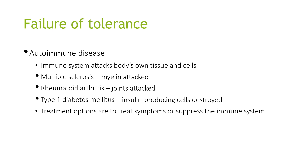Autoimmune disease is where the immune system attacks the body's own tissues and cells. For example, in multiple sclerosis, myelin is attacked; in rheumatoid arthritis, the joints are attacked; and in type 1 diabetes, insulin-producing cells are destroyed. Treatment options are to manage symptoms or suppress the immune system.